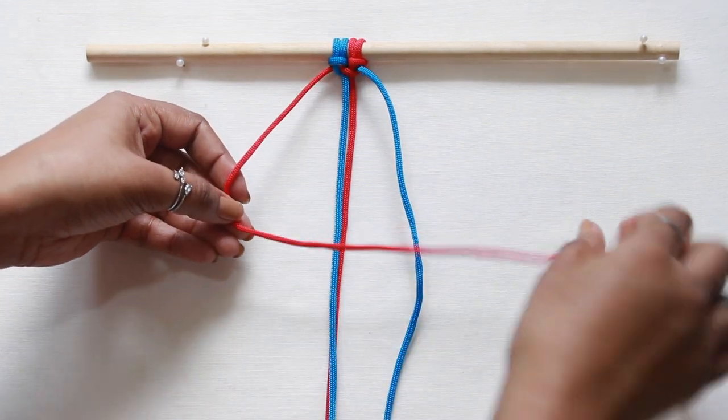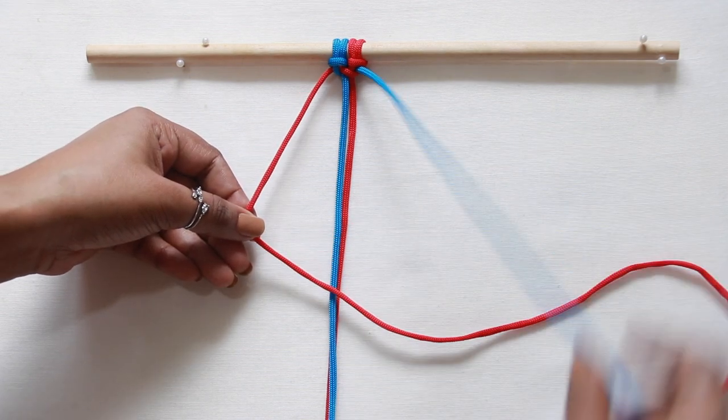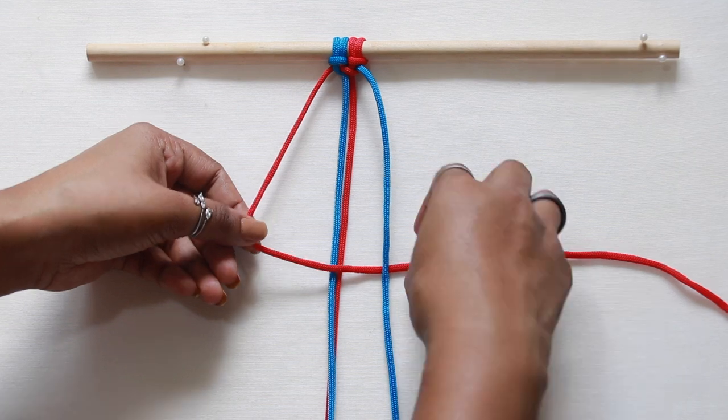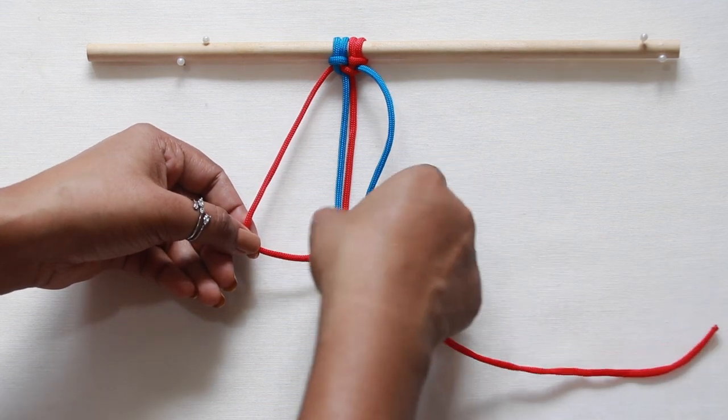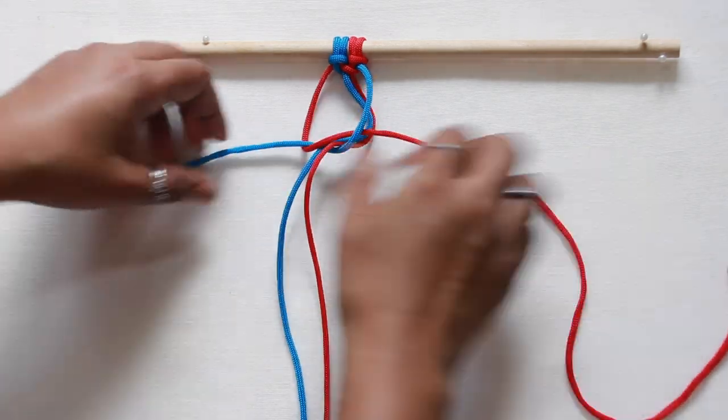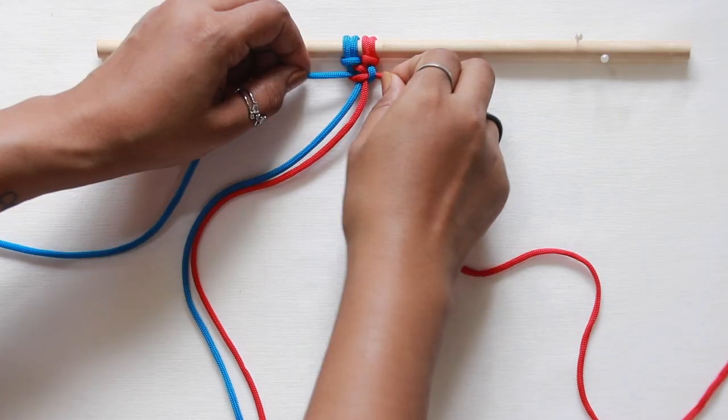This time, the left working cord is in the figure of 4 row underneath the right working cord. Pass the same right working cord underneath the filler cords and out through the loop formed on the left side and secure it tightly.